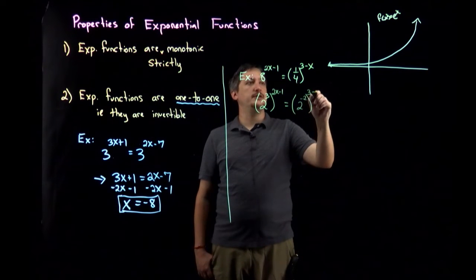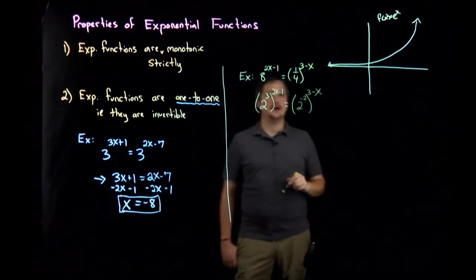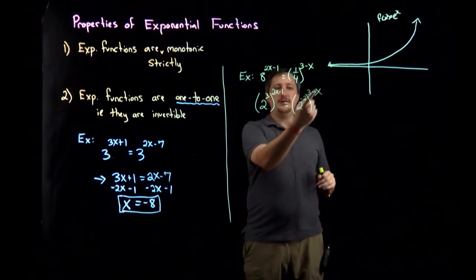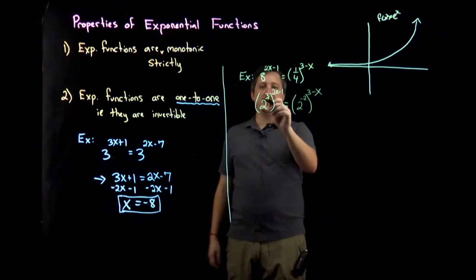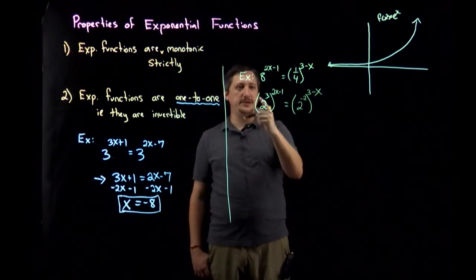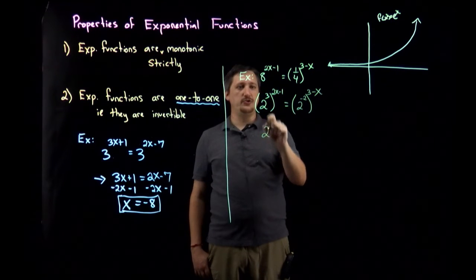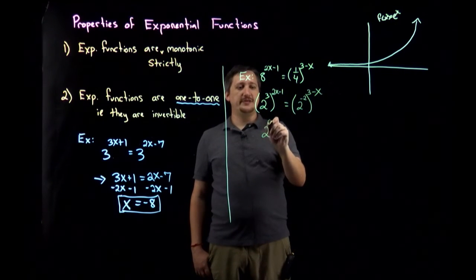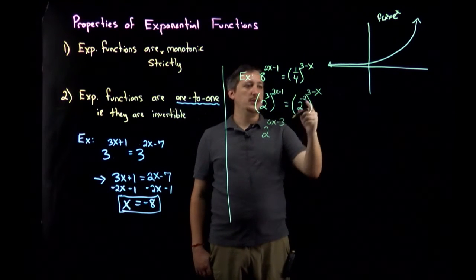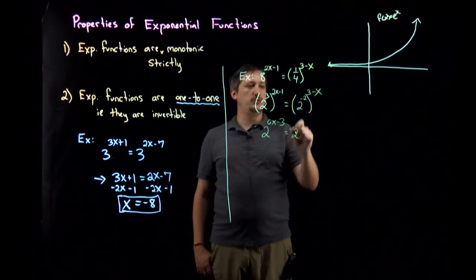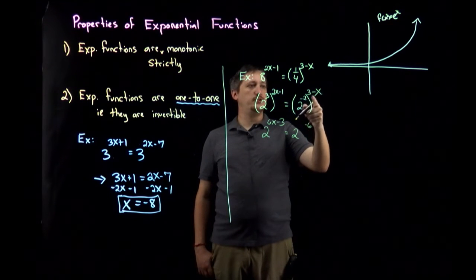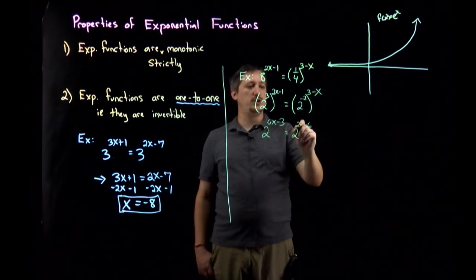I still have (3-x) as the power. But now I can do my properties of exponents - I have a power to a power, so I can multiply them to get them to be in the same power. I'm gonna get 2^(6x-3) by multiplying 3 to both, and over here I'm gonna get 2^(-6+2x), with -2 times -x giving 2x.